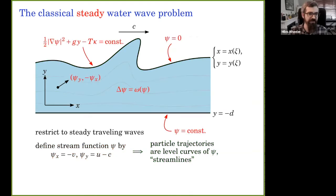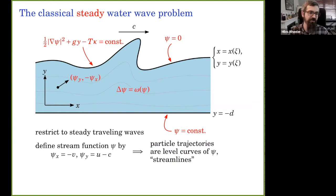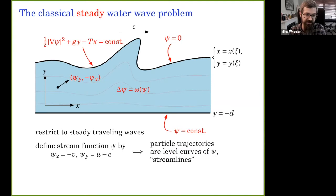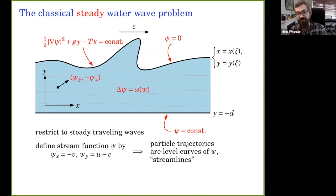Taking the curl of the two momentum equations, if we assume that the Laplacian of ψ — which is physically the vorticity, the curl of the velocity field — is functionally dependent on ψ itself (the Yih–Dubreil-Jacotin relation Δψ = ω(ψ)), then the two momentum equations are automatically satisfied. Furthermore, you can integrate them to get Bernoulli's law and eliminate pressure from the dynamic boundary condition, replacing it with a kinetic plus potential energy term: one half the speed squared of the fluid particles plus a gravitational potential energy term.